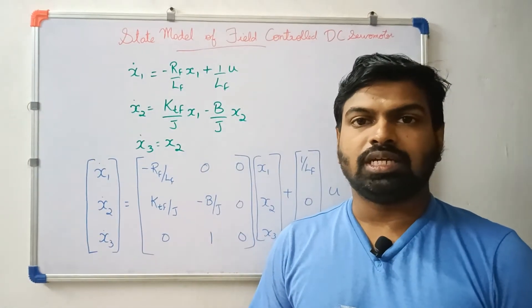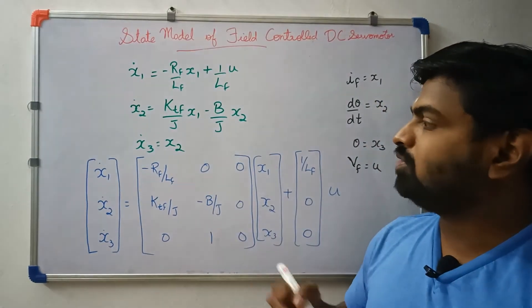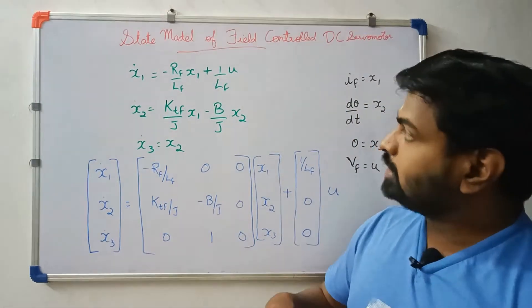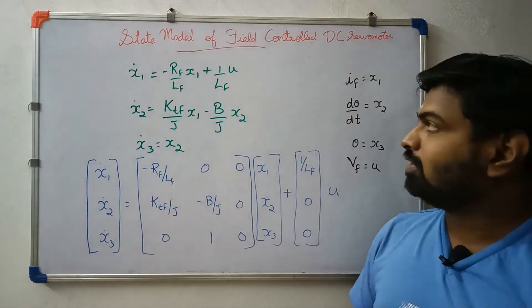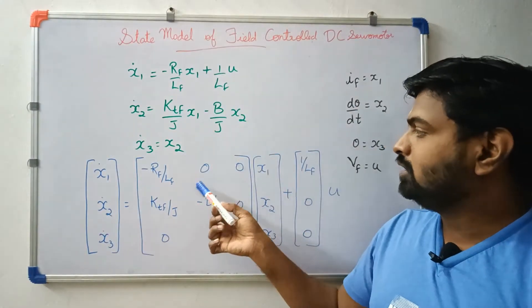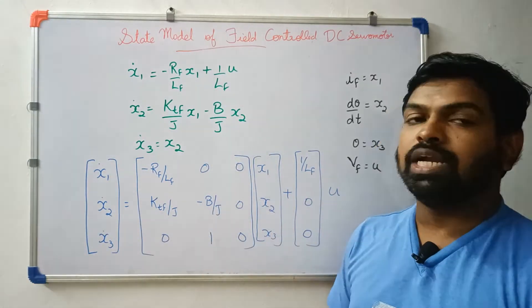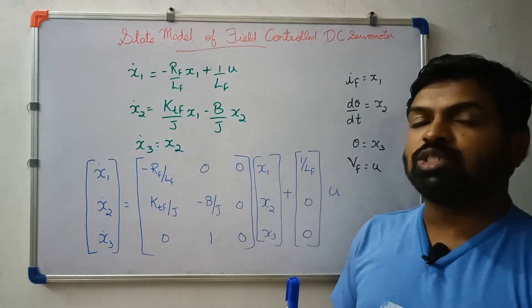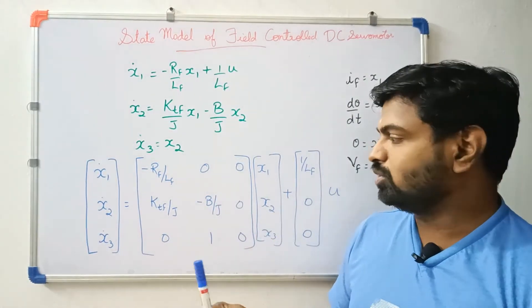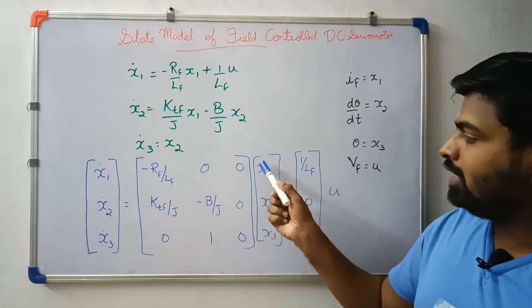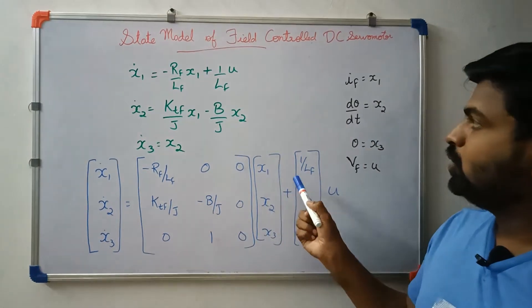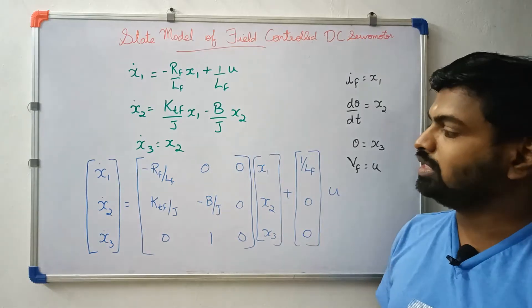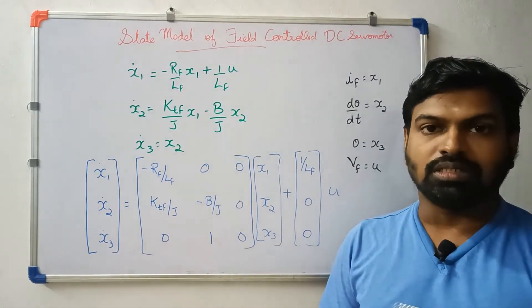Now let's get the state equation and the matrix formula. We will form [x1_dot, x2_dot, x3_dot]. The x1_dot coefficient is −Rf/Lf. For x2_dot the coefficients are ktf/j and −b/j with 0 in the third column. For x3_dot the row is [0, 1, 0]. Combined: x_dot = Ax + Bu, where B = [1/Lf, 0, 0]ᵀ into u.